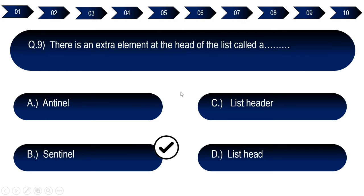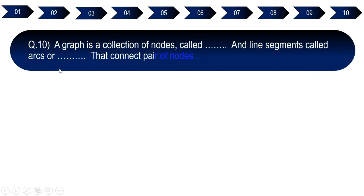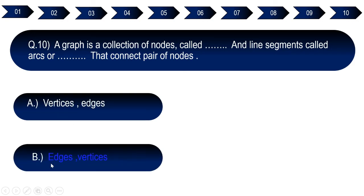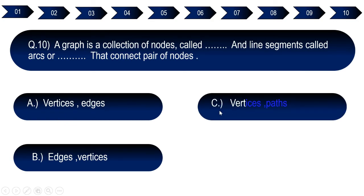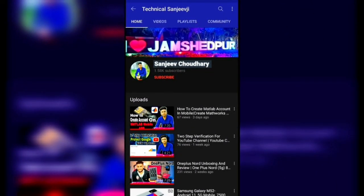Question number ten: A graph is a collection of nodes called dash and line segments called arcs or dash that connect pairs of nodes. Option A: vertices, edge. Option B: edge, vertices. Option C: vertices, path. Option D: node, edge. The right answer for question number ten is option A, vertices and edge.